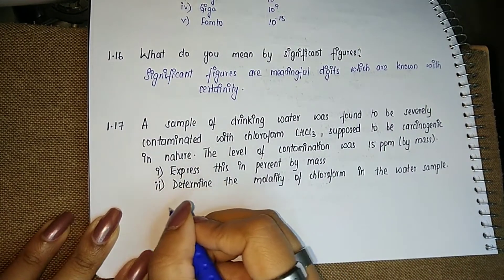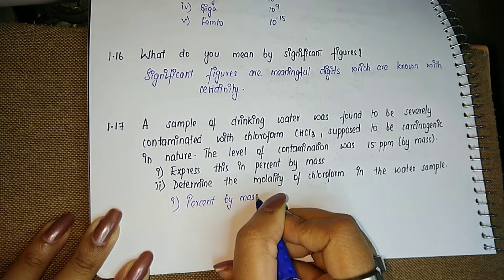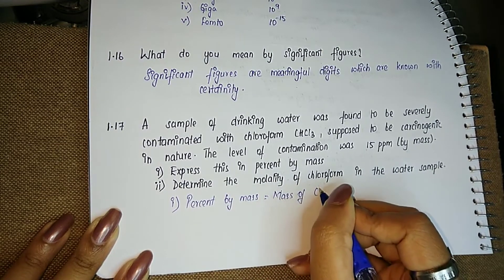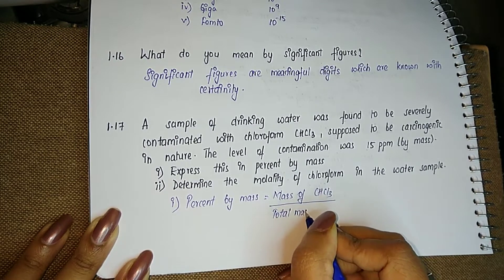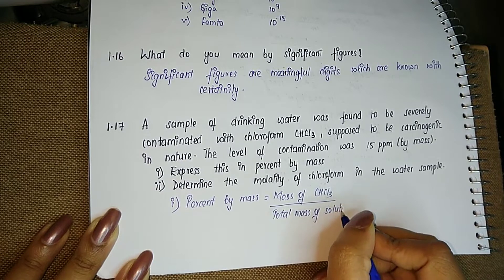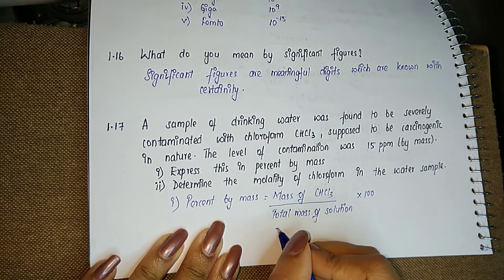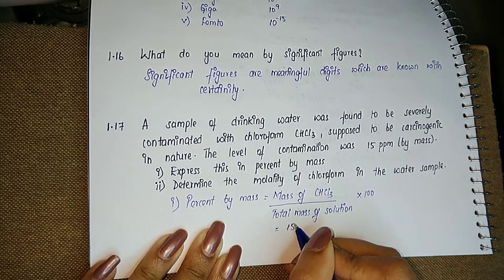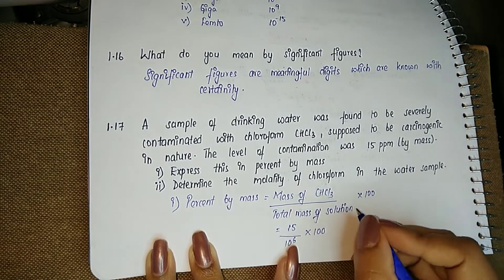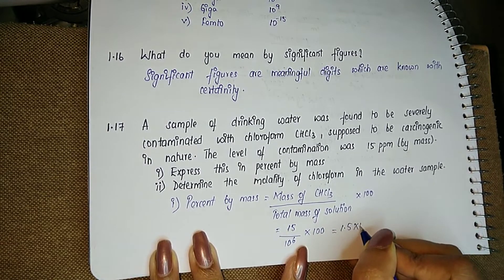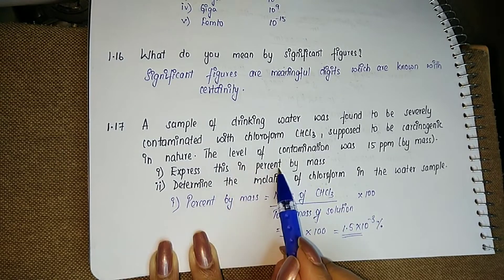For the first part, the formula for percent by mass equals mass of CHCl₃ divided by total mass of solution, multiplied by 100. Substituting the values: mass of CHCl₃ is 15, total mass of solution is 10⁶, so percent by mass equals 15 divided by 10⁶ multiplied by 100, which gives 1.5 × 10⁻³ percent. That is the answer to the first part.